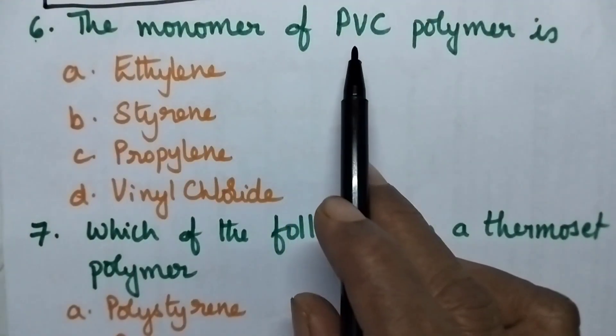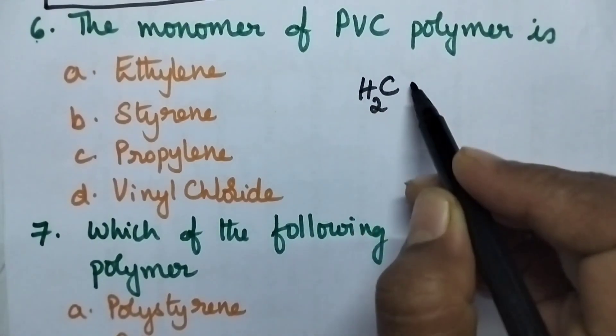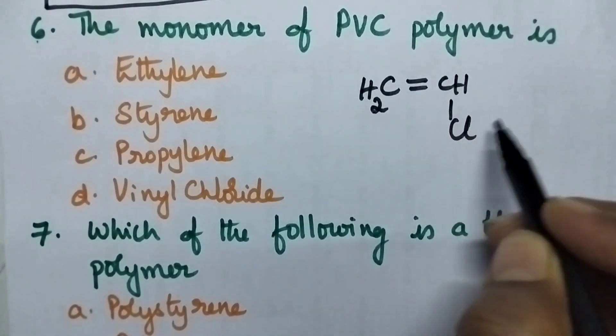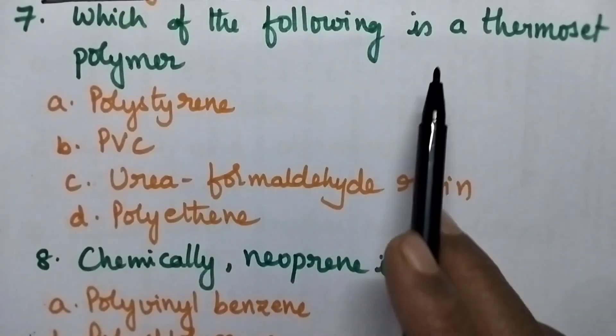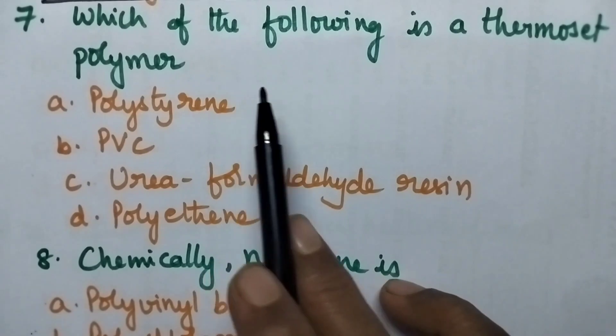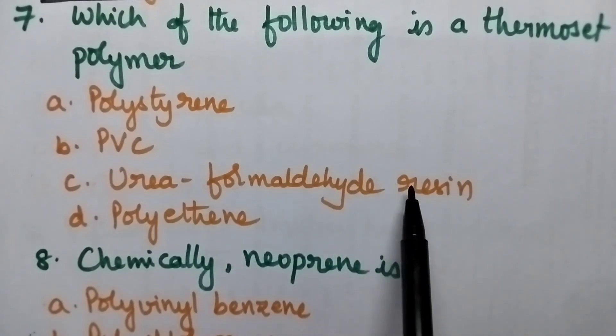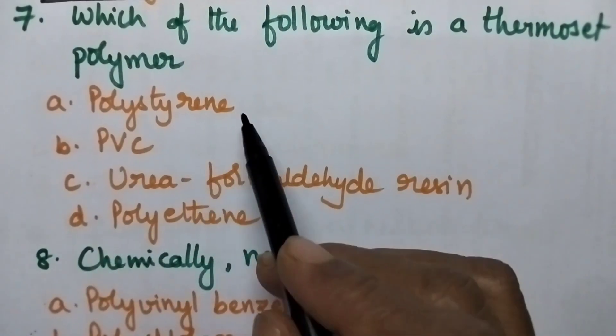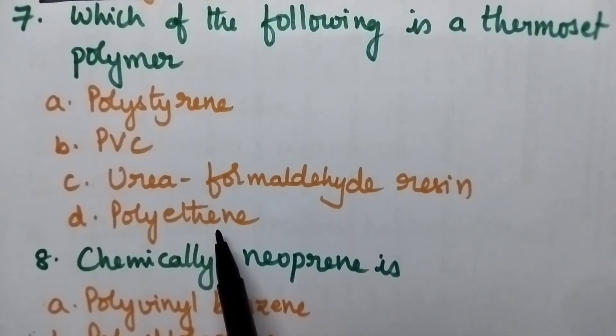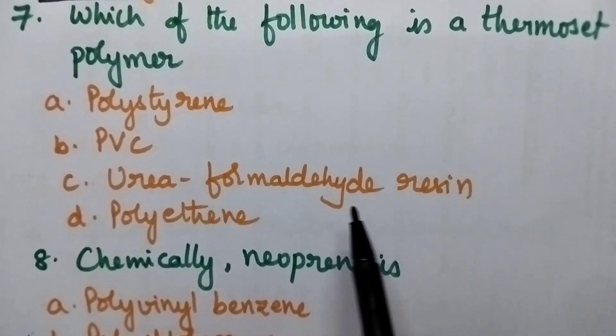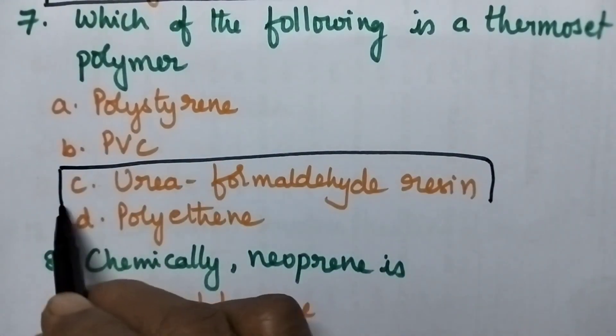The monomer of PVC polymer is? Here the monomer of PVC polymer is vinyl chloride. So option D is the right answer. Which of the following is a thermosetting polymer? Option A. Polystyrene, B. Polyvinyl chloride, C. Urea formaldehyde resin, D. Polythene. Polystyrene, PVC, polythene, these are good examples of thermoplastics. Option C. Urea formaldehyde resin is good example for thermosetting polymer. So option C is the right answer.